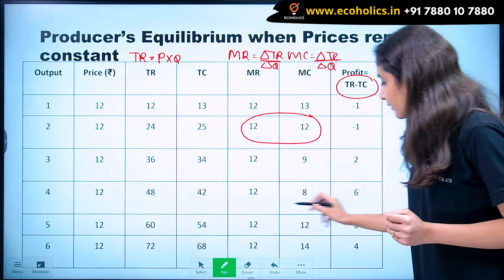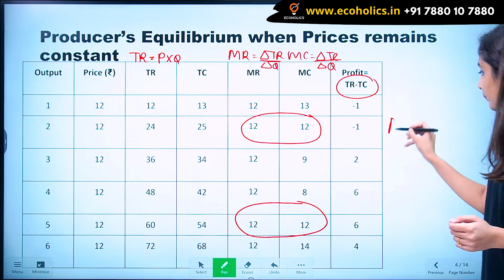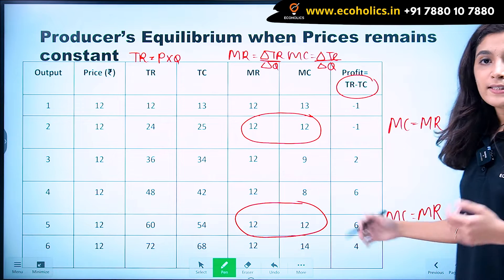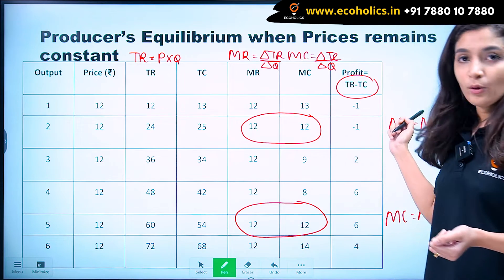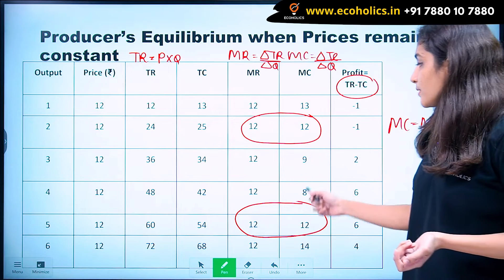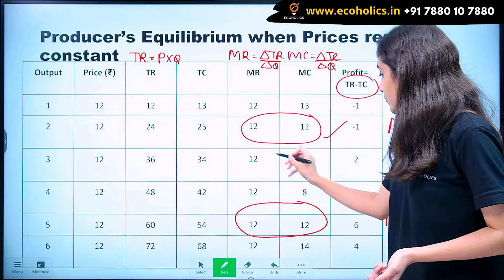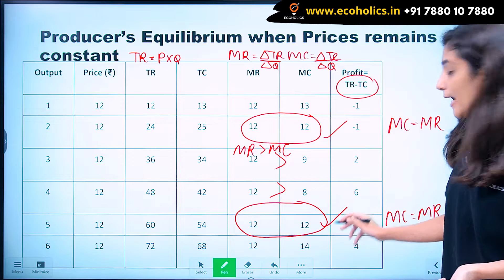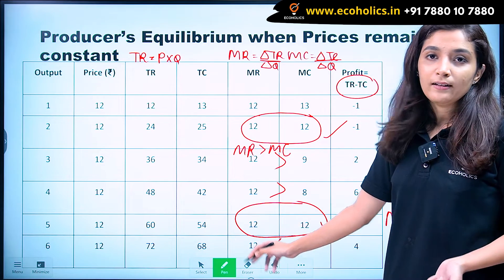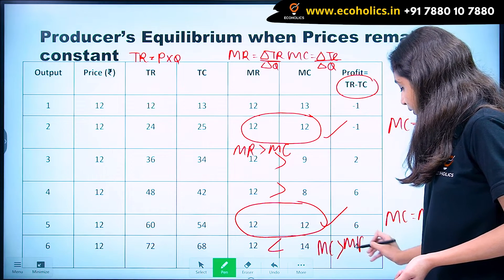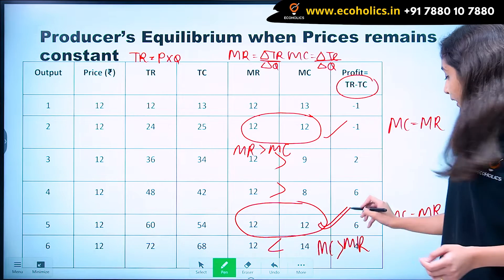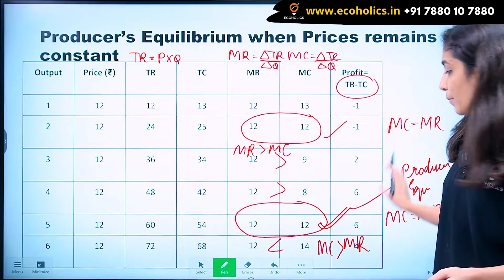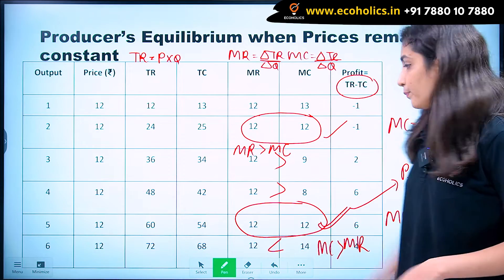A producer will be at equilibrium when both conditions are satisfied — that is when MC is equal to MR. Looking at the table, at two points our MC equals MR. But we also check the second condition: after the MC equals MR point, MC should be greater than MR. The producer earns maximum profits when producing five units of output, satisfying both conditions.